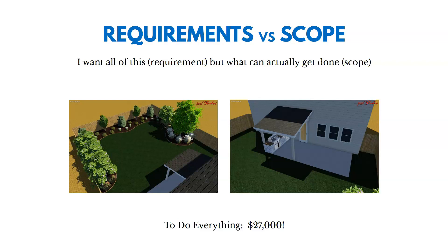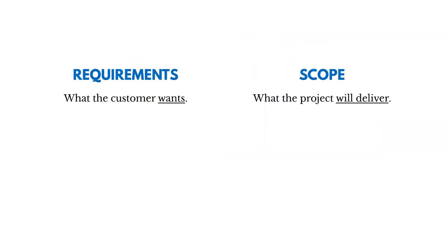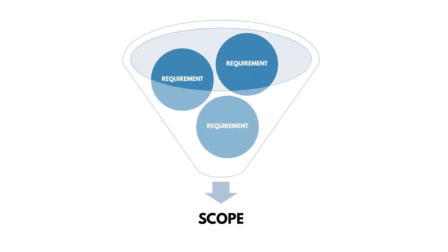Requirements are really what the customer wants, and scope is what the project will actually deliver. Scope may not include all requirements because of constraints we have of cost and schedule. Think about all the requirements coming in and the scope coming out — we're developing a detailed description and decomposing it to make it easier to manage.